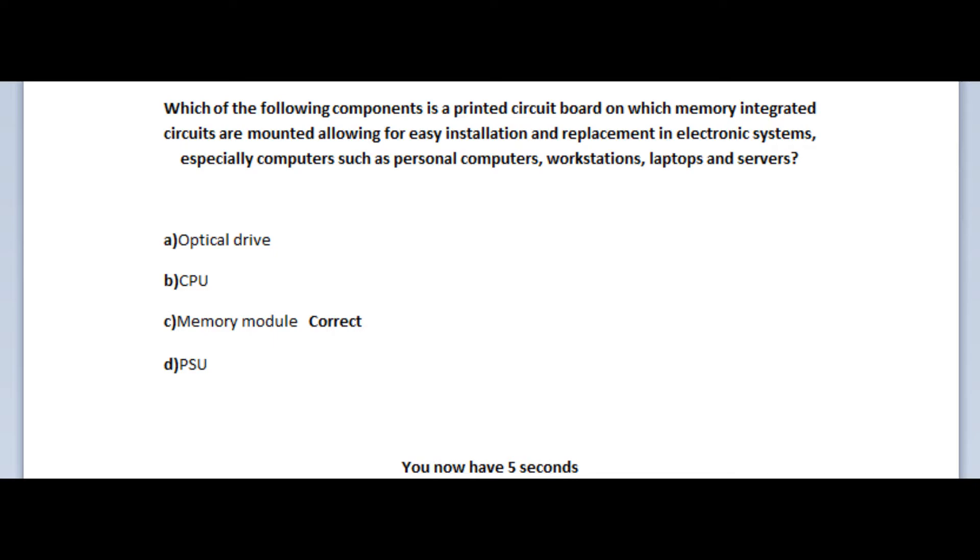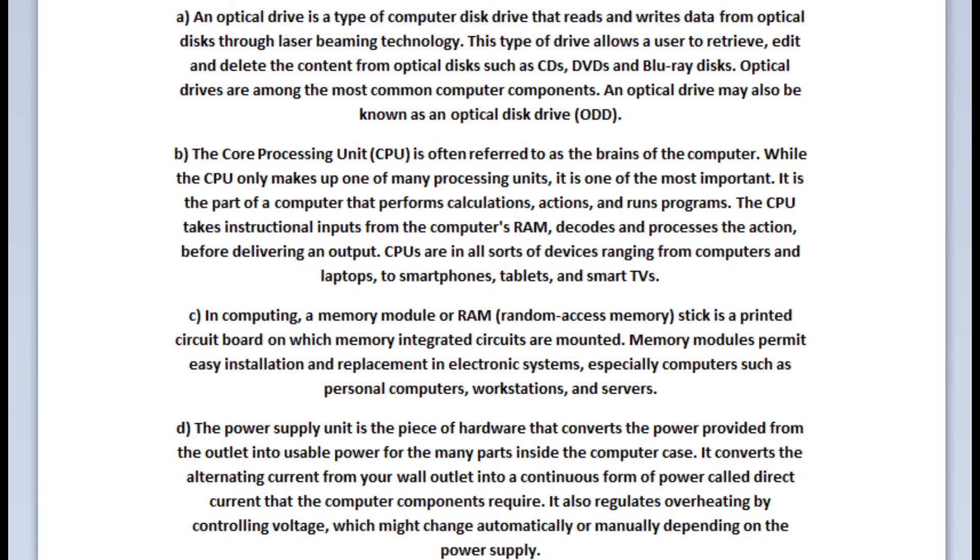And the correct answer is C, a memory module. In computing, a memory module or RAM, an acronym for Random Access Memory stick, is a printed circuit board on which memory integrated circuits are mounted. Memory modules permit easy installation and replacement in electronic systems, especially computers such as personal computers, workstations, and servers.